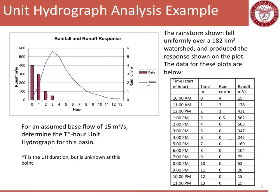Here's the example. We have a rainstorm shown as a bar chart on the figure. You can see the first hour from zero to one, it rained four centimeters, then three centimeters, then one centimeter, and then half a centimeter. The rainstorm fell over a 182 square kilometer watershed and produced the response shown on the plot. For an assumed base flow of 15 cubic meters per second, we are going to determine the T-hour unit hydrograph. As part of this, we will find that duration, but right now it's unknown.